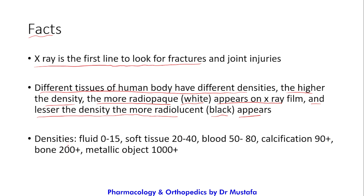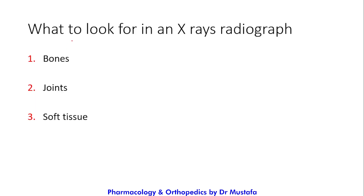Every tissue and content of the human body has a different density, on a scale from 0 to 1000 — zero being the most radiolucent (black) and 1000 being the most radio-opaque (white). Fluid is 0–15, soft tissue 20–40, blood 50–80, calcification 90+, bone 200+, and metallic objects 1000+.